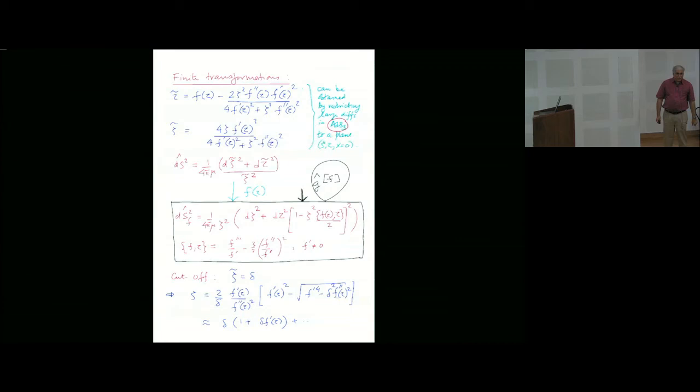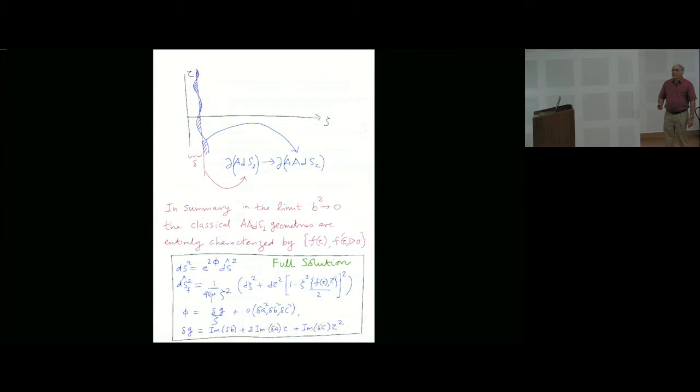What happens to this cutoff actually? So it wanders under this transformation. The wandering is basically given by this simple picture that in the xi-tau coordinates, this is how the cutoff looks really. This is how the boundary of AdS-2 maps into the boundary of almost AdS-2. In summary, summarizing these last few slides, in the limit b-square going to zero, the classical geometries which I admit over here are given by this box.